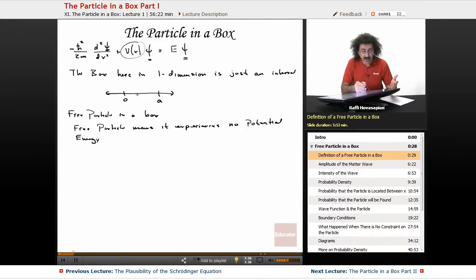The questions that we pose in quantum mechanics are: which direction is it moving? How fast is it moving? And at any given moment, can I tell you where it is? Those are the questions that we want to ask. And these are the questions that the wave function is hopefully going to answer for us. Free particle means it experiences no potential energy, which means that V of X is equal to zero.